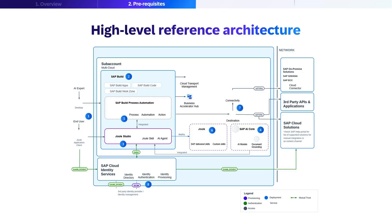Third-party APIs enable skills to integrate external services and data sources, and SAP cloud solutions allow access to cloud-native SAP applications and services. The architecture includes two destination services for Joule and SAP AI Core integration, enabling skills to access AI models for enhanced natural language understanding, leverage custom skills and document grounding through SAP AI Core, and utilize both SAP-delivered and custom-developed skills. Identity and access management is handled through SAP Cloud Identity Services, ensuring secure skill execution with proper user context via SAML 2.0 and OIDC protocols.